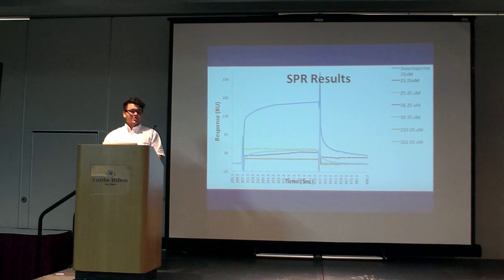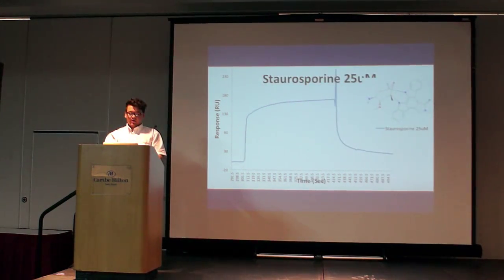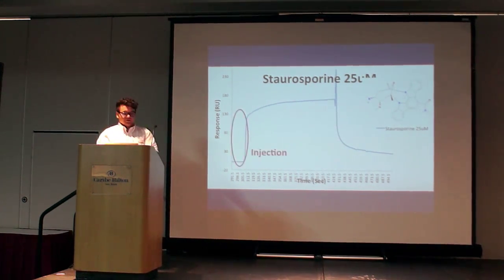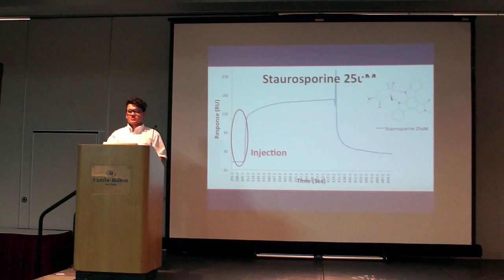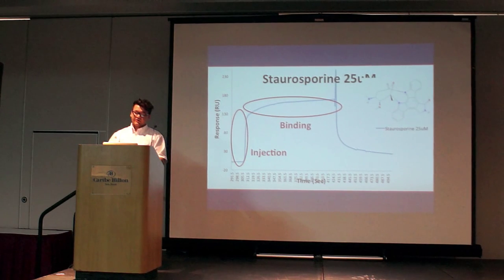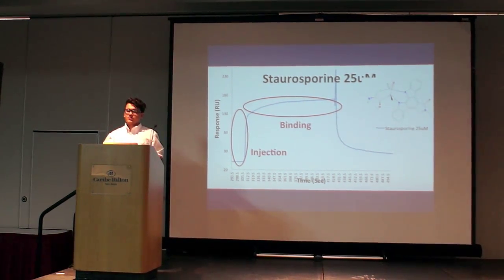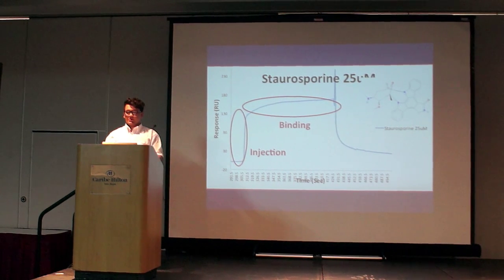Now on to my results. Here are my initial SPR results. They are at 25 micromolar, and the graph represents the injection onto the chip. In the first part of the graph, we have the injection. When the injection starts, there is a large increase in response. During the second part, we call this the binding phase, because when the three-minute injection starts, we see a slow increase in the slope. When we see a slow increase in slope, this allows us to infer that our molecule is binding to our protein.